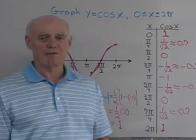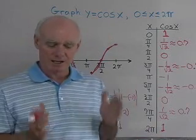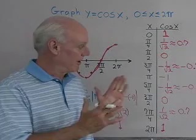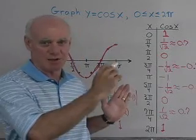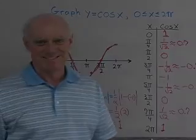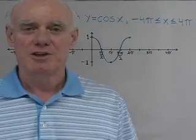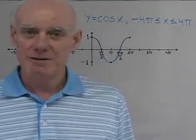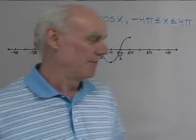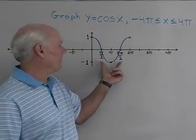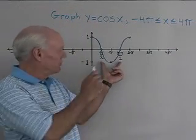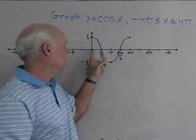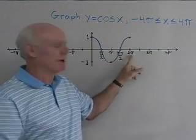So there's a look at graphing y equals cosine x by making a table of values, using those values to find points on the curve, and connecting them with a smooth curve. Next we want to look at the graph of y equals cosine x between negative four pi and positive four pi. Over here on the board I've drawn one complete cycle between x equals zero and x equals two pi.